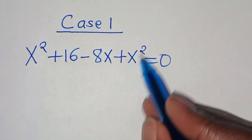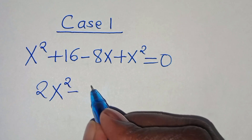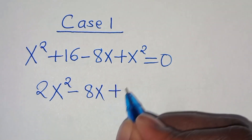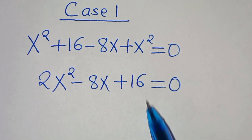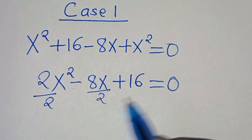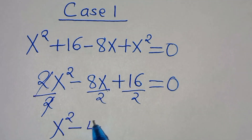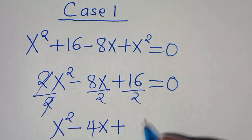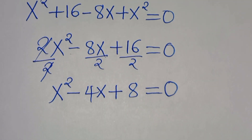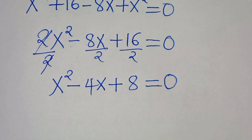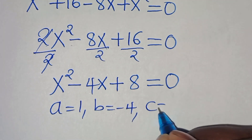Now we have x squared plus x squared, which is 2x squared, minus 8x plus 16 equals 0. Dividing through by 2, this simplifies to x squared subtract 4x plus 8 equals 0. This is a quadratic equation where a equals 1, b equals minus 4, and c equals 8.